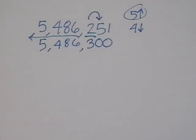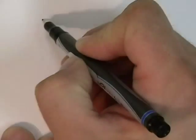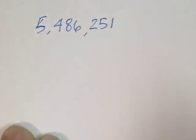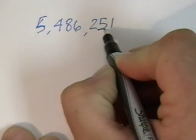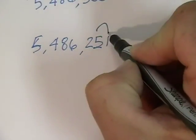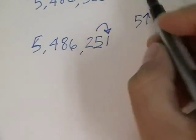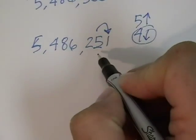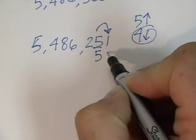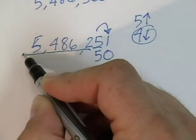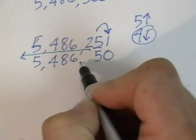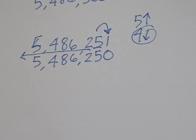Now let's round this number to the nearest ten. So we have 5,486,251. Because we're rounding to the nearest ten, we find the tens place — ones, tens — and underline that. We look to the right. If it's 5 or more, we'll add one more. If it's 4 or less, it stays the same. So this 1 is 4 or less, so we just keep the 5 as it is. The 1 becomes a zero, and then all these digits to the left of the 5 we just bring them down and they stay the same: 5,486,250. And that's rounded to the nearest ten.